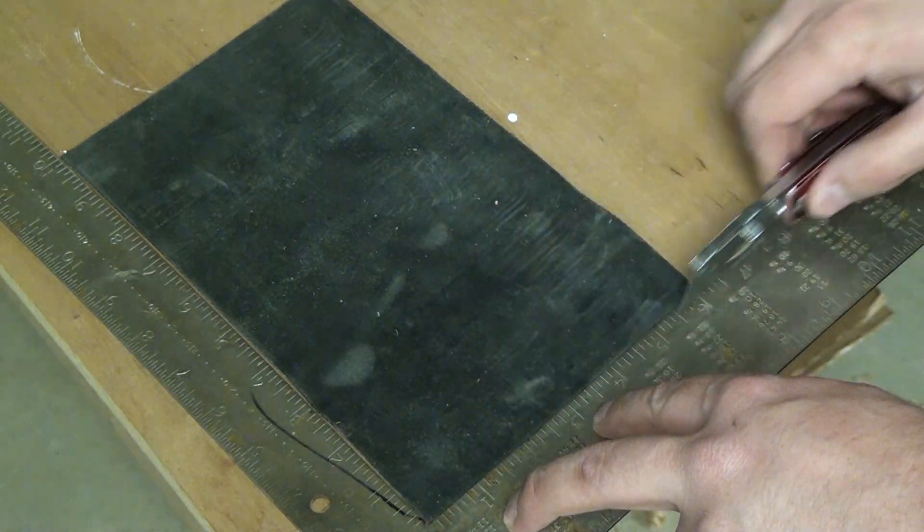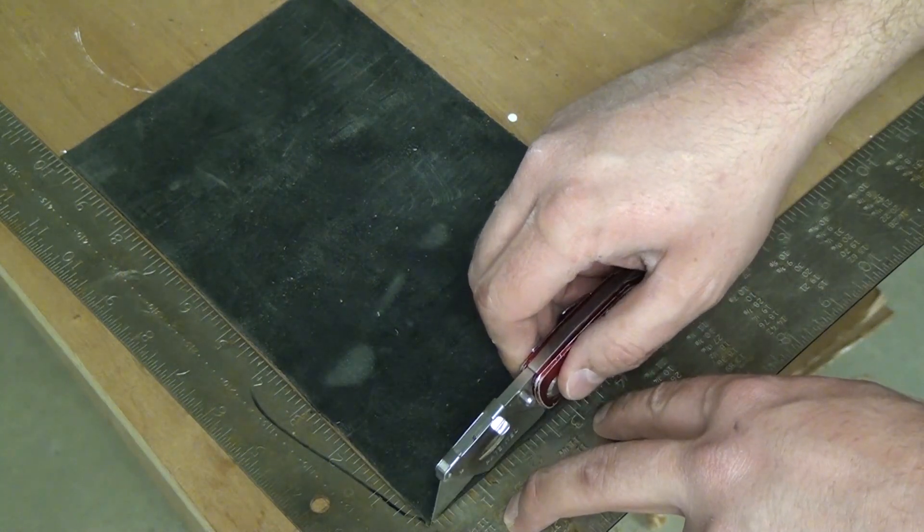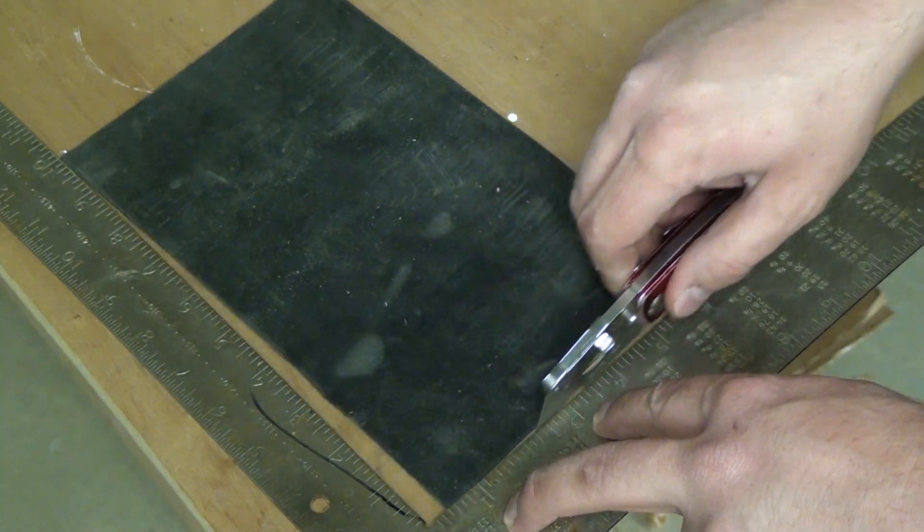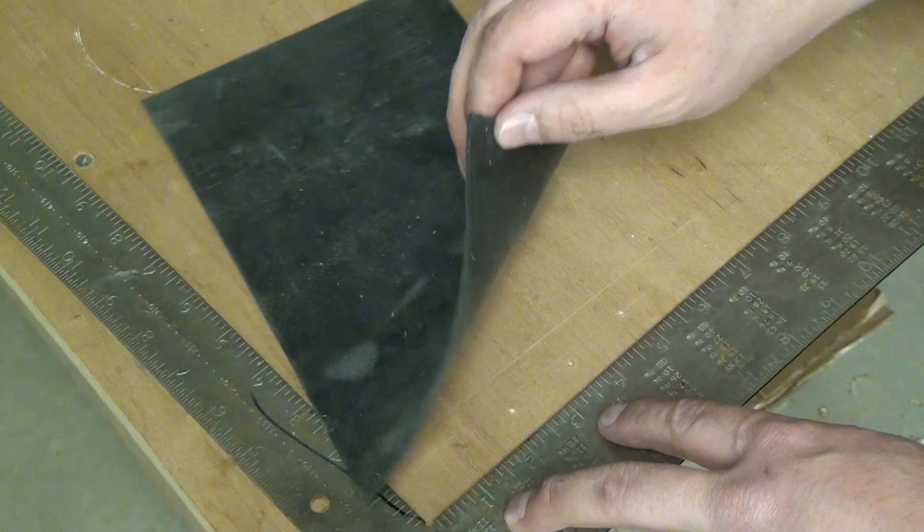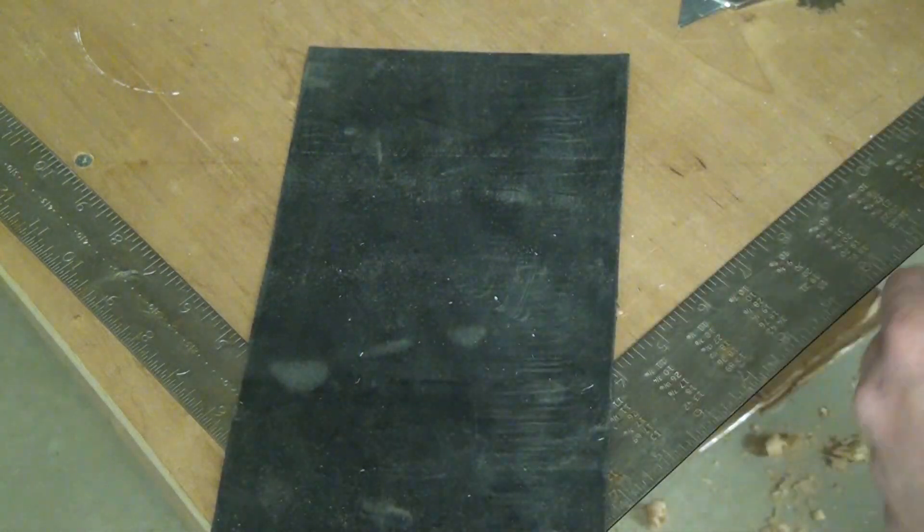If you do one heavy cut, you'll actually distort the rubber and your cut's not going to come out perfectly straight. So multiple light passes and you get through this stuff super easy.